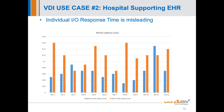Consider this: if this was the only metric you were looking at, you'd probably walk away with a feeling that Velocity was actually slowing things down a bit because the write latency was a bit longer. This kind of ties back to what Jennifer was talking about with regard to the IO response time myth.